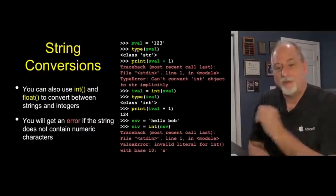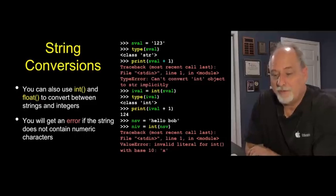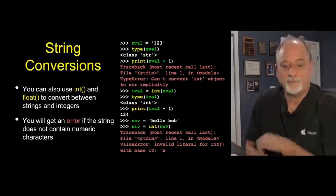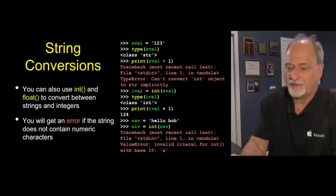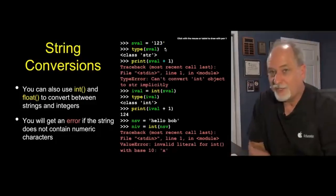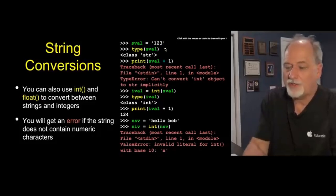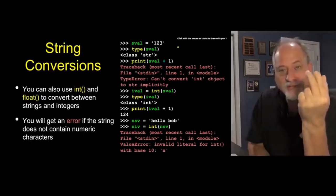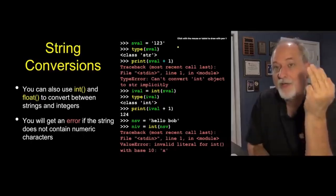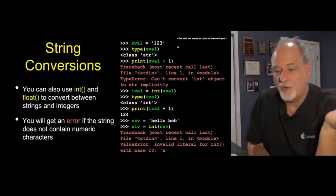We've been talking about converting from integer to floating point, but you can also convert from string to integer or string to floating point. So here we start out with a little string value. It only works for strings that are made of digits. Quote one, two, three, quote is not an integer. It is a three character string that has one, two, three as the characters in that string, which is very different than 123.